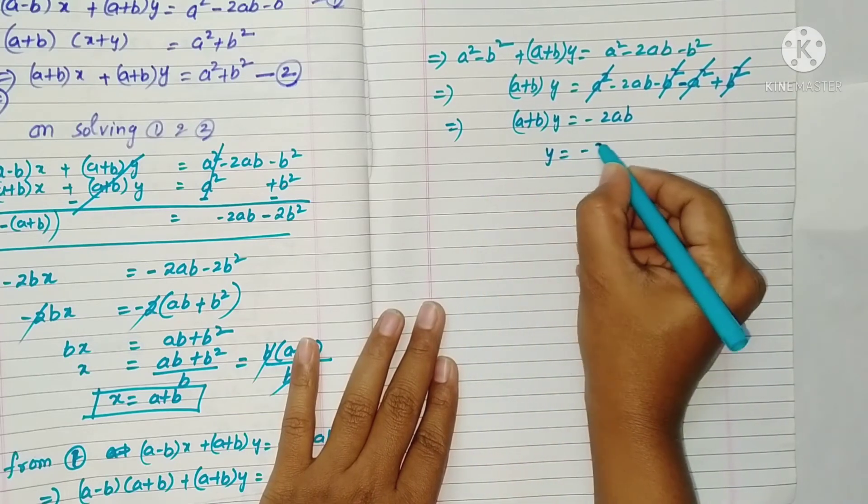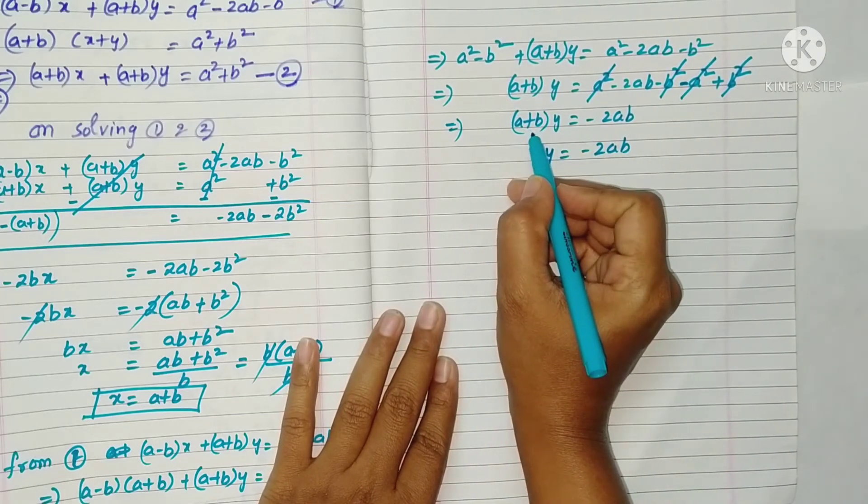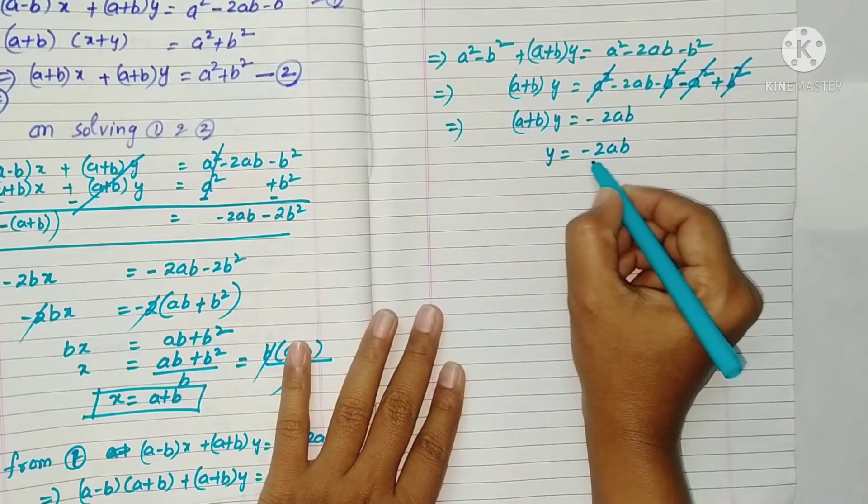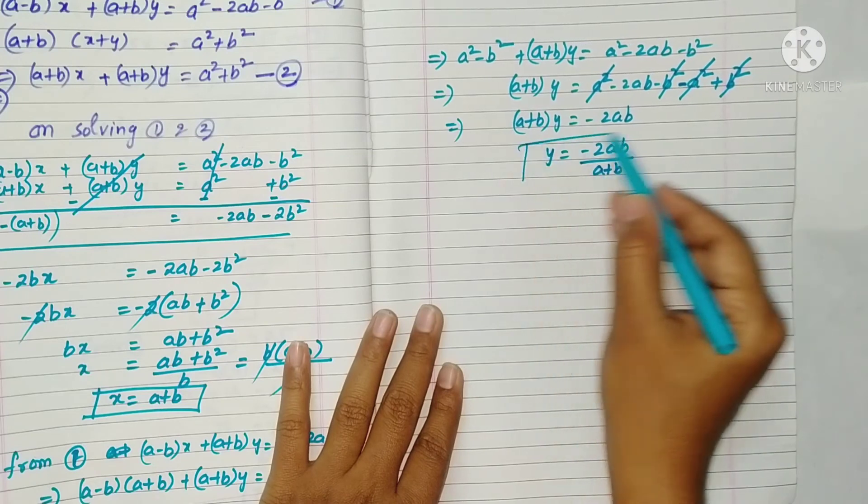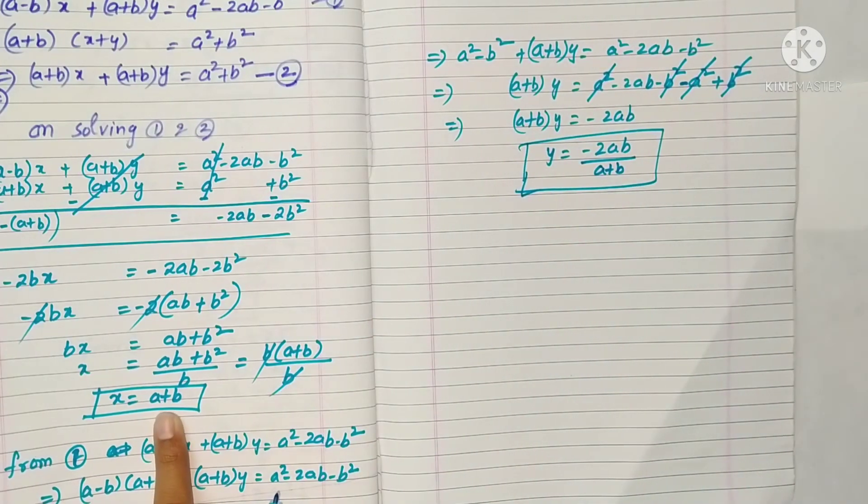y is equal to minus 2ab. Here it is in multiplication. So if you transpose, it comes under division. So this is the y value, and x is equal to a plus b, okay?